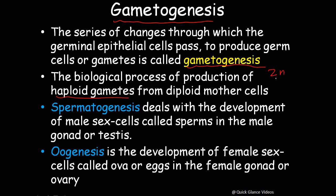The process converts diploid 2n cells into haploid cells. Gametogenesis has two forms: spermatogenesis, which deals with development of male sex cells called sperms in the male gonad or testis; and oogenesis, which is the development of female sex cells called ova in the female gonad or ovary.